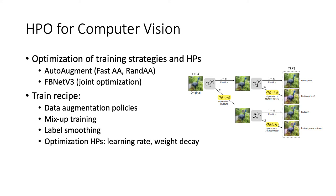In addition to finding optimal architectures, exploring better training strategies has become equally important. For example, AutoAugment boosts the state-of-the-art result on image classification by learning a set of data augmentation policies. Our recent work, EfficientNetV3, jointly searches the training hyperparameters as well as the model architectures, as they are often entangled. The training recipes include data augmentation policies, mixup training parameters, label smoothing factor, and optimization hyperparameters such as learning rate and weight decay.